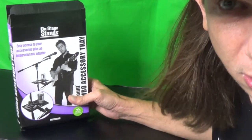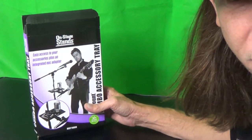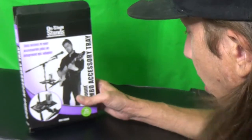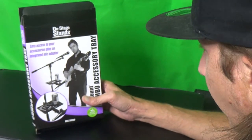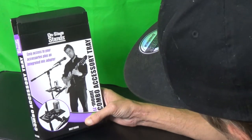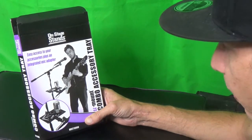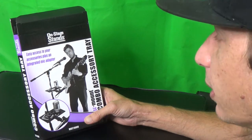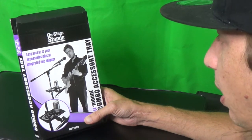Look, we've reviewed a lot of awesome stuff before on this channel, thanks for subscribing. But right now we're going to review the MST1000 OnStage Stands U-Mount Combo accessory tray. This gives easy access to your accessories plus an integrated mic adapter, all in the same box.